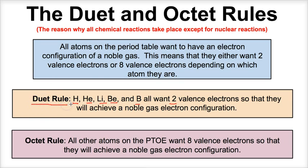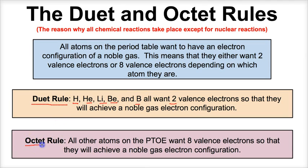That is known as the duet rule. If they achieve this, they will have a noble gas electron configuration. You can think of noble gases as the cool kids on the block — all other atoms want to look like a noble gas. All noble gases have either two valence electrons or eight valence electrons. Every other atom on the periodic table wants either two or eight valence electrons. Hydrogen, helium, lithium, beryllium, and boron all want two. All other atoms on the periodic table want eight. The octet rule refers to the fact that most atoms want eight valence electrons in their outer shell.